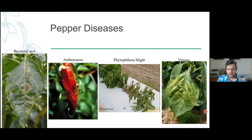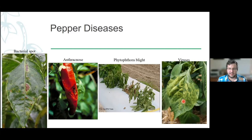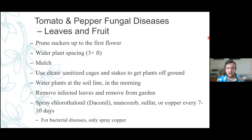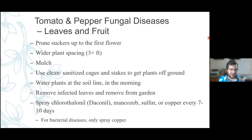Viruses are hard to determine — they do weird things to plants. You get everything from plants being asymptomatic, to leaf mottling, to distortion that looks almost similar to herbicide damage. They're a little tricky to determine and not as common. Typically with viruses, plants will continue to fruit and produce. Pruning the suckers up to that first flower, keeping wider spacing, mulching, and cleaning everything — especially sanitizing cages. If you're using old cages from year to year, make sure you're cleaning and sanitizing them, because if there are still fungal spores sitting on them, as soon as the plant grows up, it's going to spread higher in the canopy.